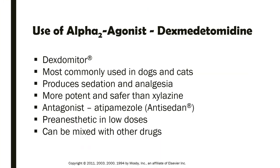Another alpha-2 agonist is dexmedetomidine, available as Dexdomitor. It is most commonly used in dogs and cats, and it provides sedation and analgesia. It is more potent and safer than silocene. The antagonist or reversal agent of dexmedetomidine is atipamisol, which is an alpha-2 adrenergic antagonist with the brand name Antisedan. It is used as a pre-anesthetic in low doses and can be mixed with other drugs.